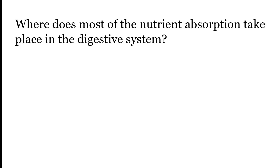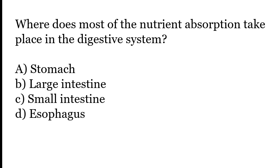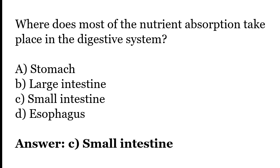Where does most of the nutrient absorption take place in the digestive system? Options: stomach, large intestine, small intestine, esophagus. The correct answer is option C — most of the nutrient absorption takes place in the small intestine of the digestive system.